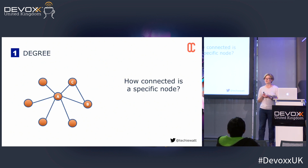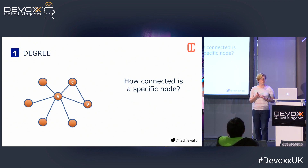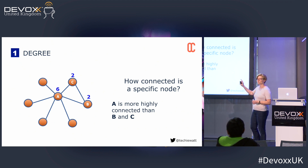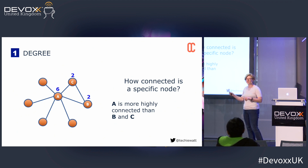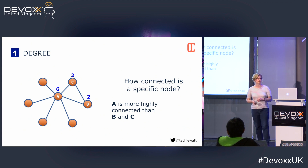I'm going to introduce you to three specific measures and algorithms and then apply them practically. The first one is what's called the degree of a node within a network. The degree of a node is simply how connected a specific node is. If we take this example, we can see that A is more highly connected than B and C because it has six connections going in and out of it, whereas B and C have only got two.